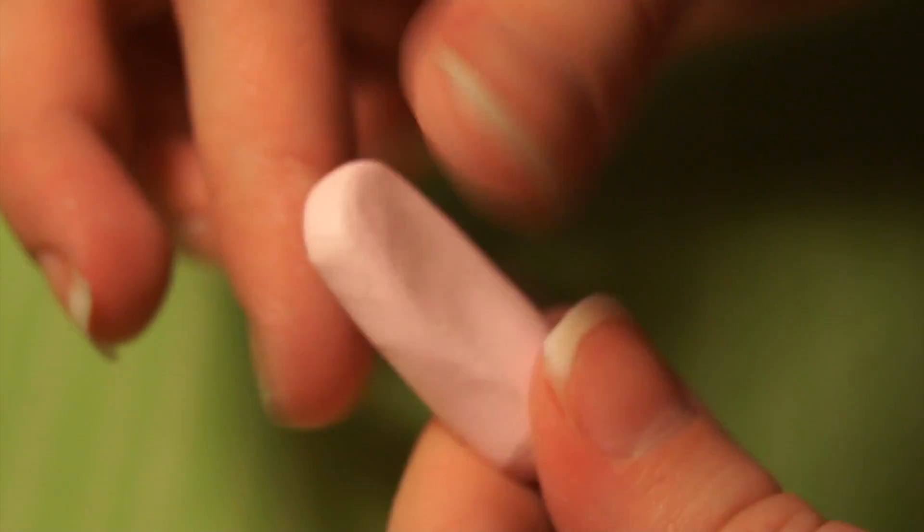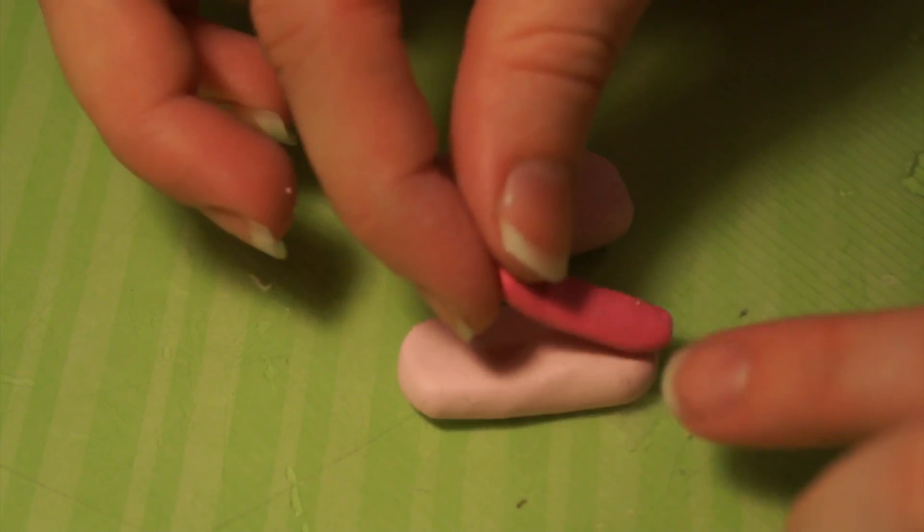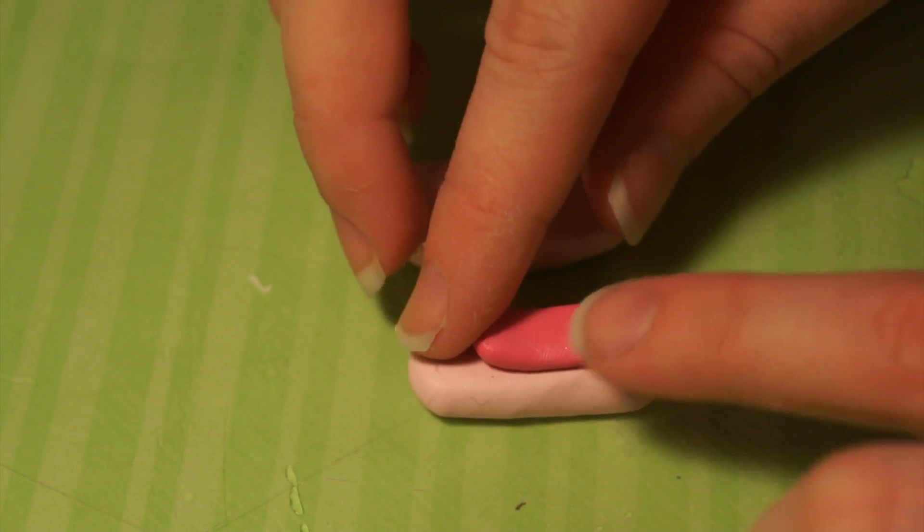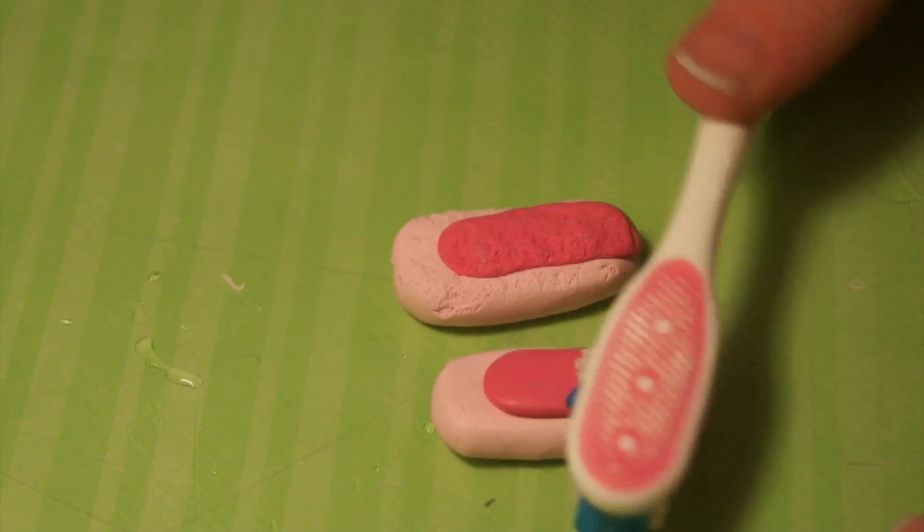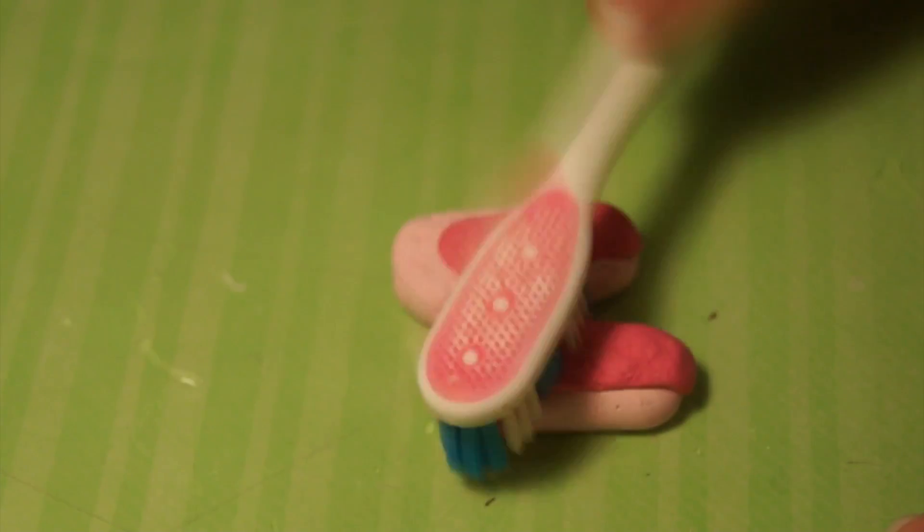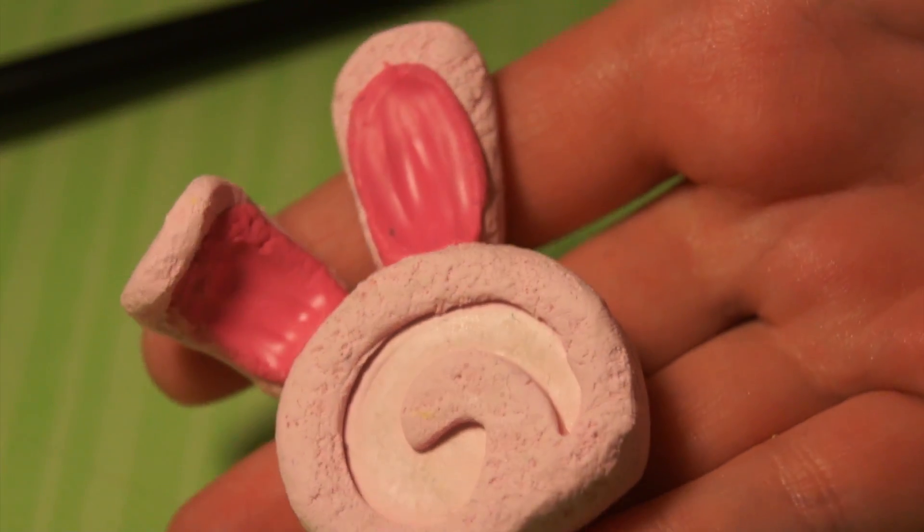For the ears, I'm just going to roll out some logs and flatten them, and then for the inner ear I'm just going to use some hot pink clay. Then I'm just going to texture those also with a toothbrush. Then I'm just going to attach the ears on, bending one a little bit.